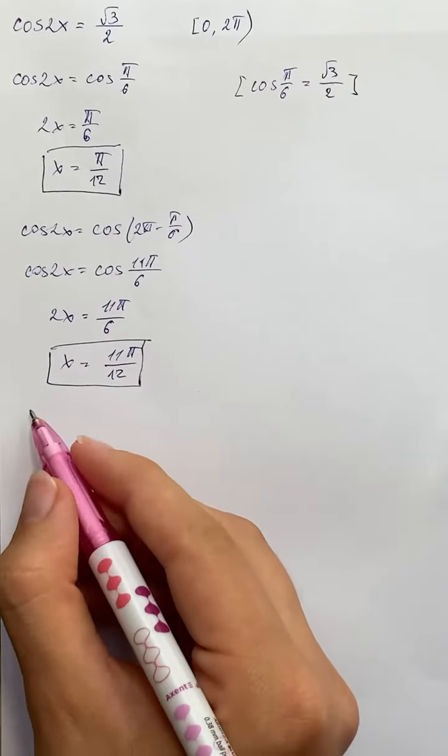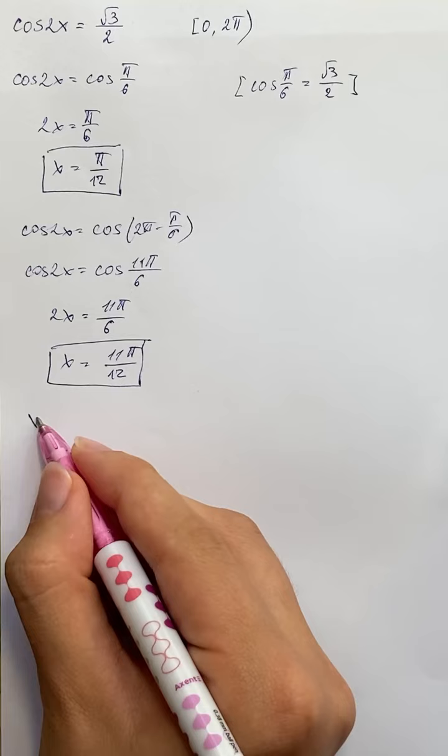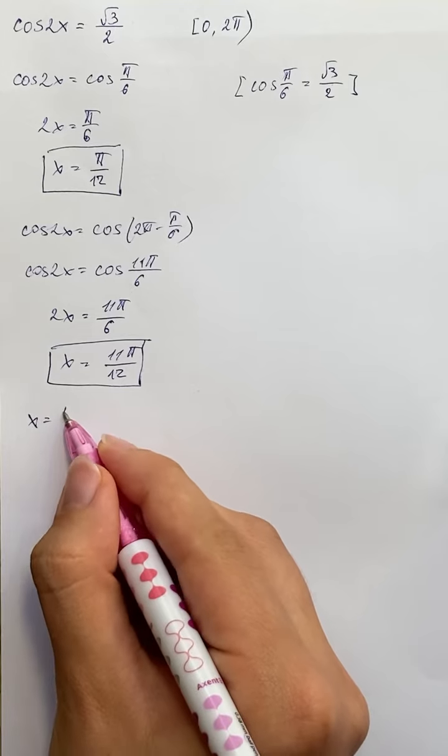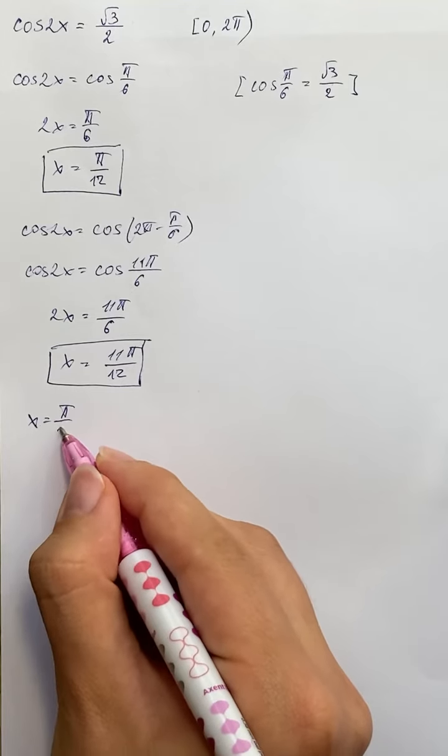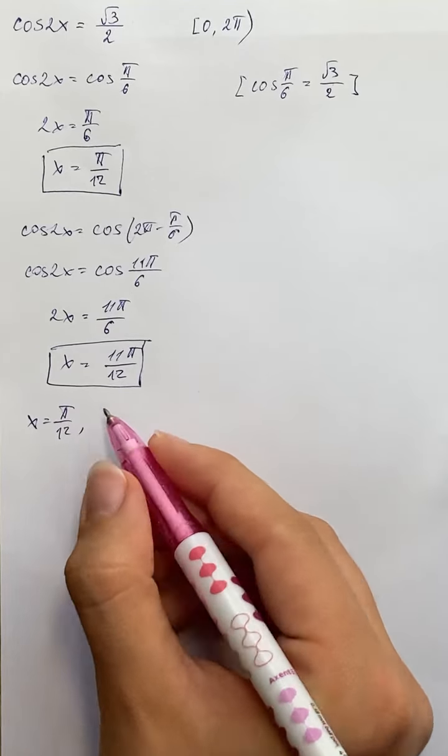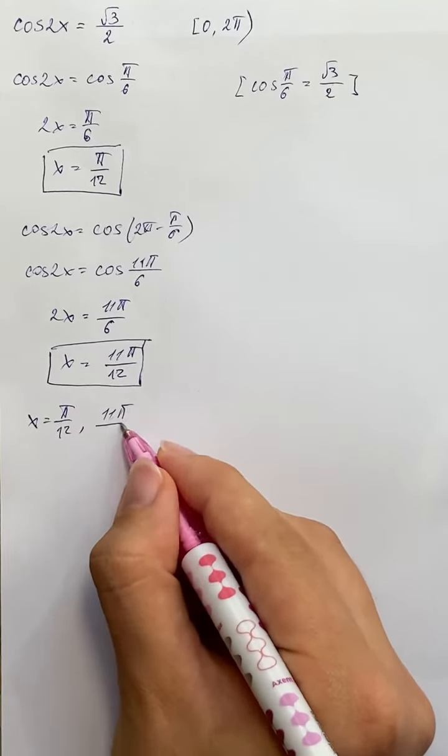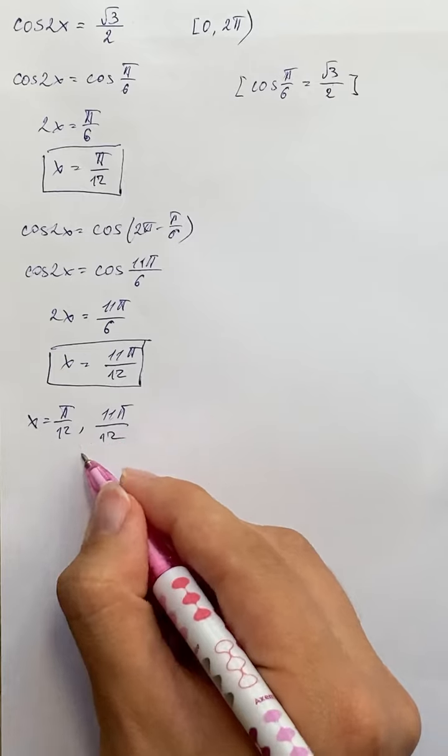Our answer is x equals pi over 12 and 11pi over 12.